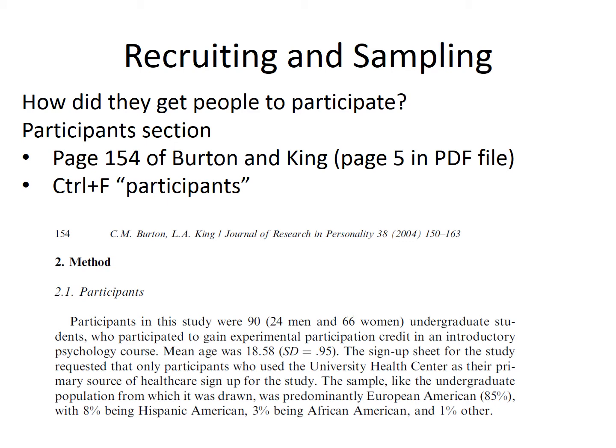The recruiting and sampling section of the worksheet is about how the researchers got people to participate in the study — in other words, how they collected their sample and what that means for the type of sampling method they used. APA style usually makes finding information about participant recruiting fairly easy because it's typically included in the participant section, and it's usually labeled with 'participants.' When working with electronic files, you might be able to use the find function to search for the word 'participants' and get to it quickly — that can also help when the journal uses a different style for headings.